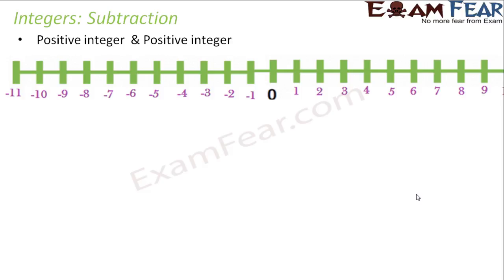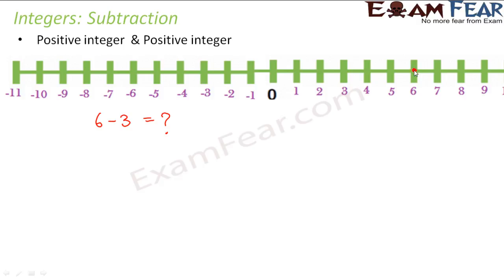First we will consider subtraction between positive integer and positive integer. Let's take an example: 6 minus 3. What would be the value of 6 minus 3? 6 is somewhere here and we are trying to subtract a positive number from 6. So trying to subtract a positive number from 6, you will be moving towards left. So 3 jumps towards left, and you arrive at 3. So 6 minus 3 would be 3.